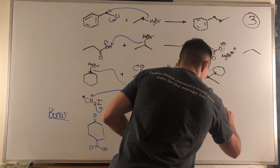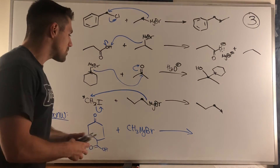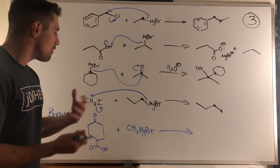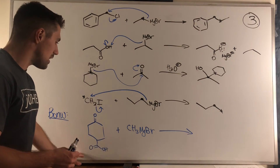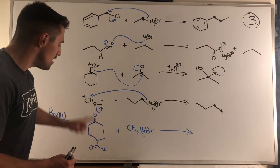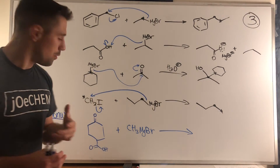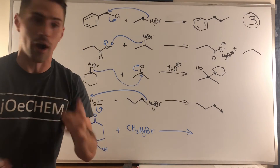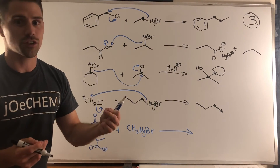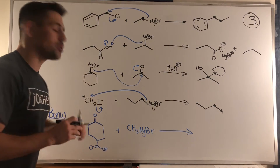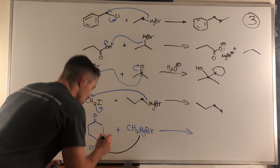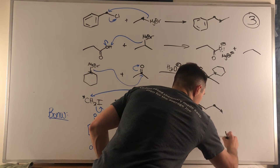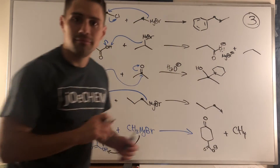Last but not least, this problem really hammers home your understanding. We have a structure with a ketone and also an OH group, reacting with methyl Grignard. Are you going to attack the ketone, or spoil your Grignard with an acid-base reaction? The acid-base reaction is so fast and exothermic that it happens first, using up all your Grignard. That ketone remains unharmed. So we get the carboxylate at the bottom, the ketone intact at the top, and just methane.